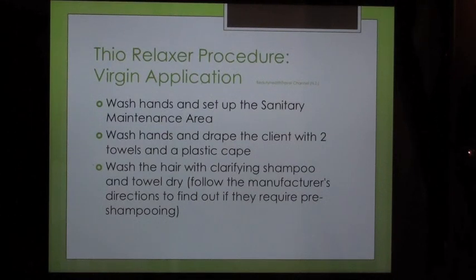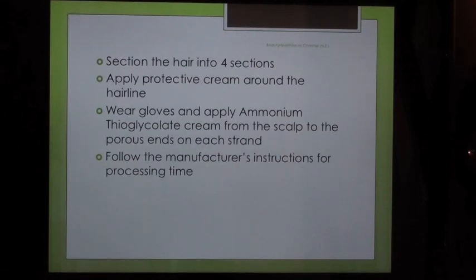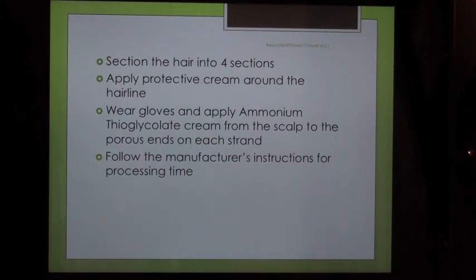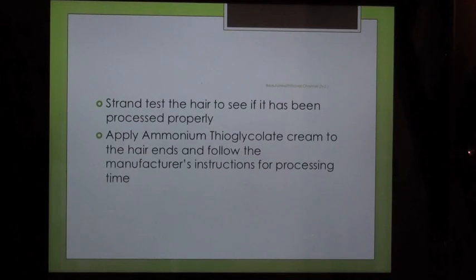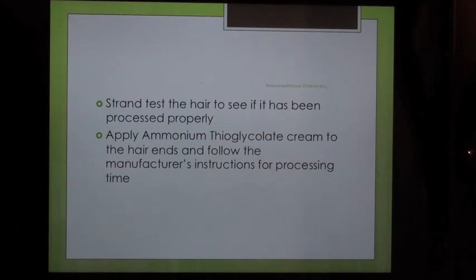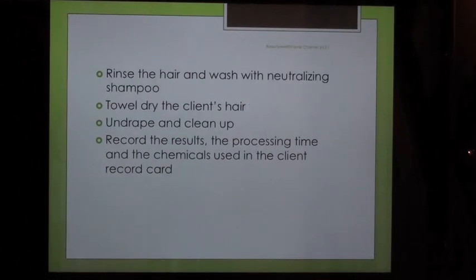Thio relaxer procedure — virgin application: Wash hands and set up the sanitary maintenance area. Drape the client with two towels and a plastic cape. Wash the hair with clarifying shampoo and towel dry. Follow the manufacturer's instructions to determine if pre-shampooing is required. Section the hair into four sections. Apply protective cream around the hairline.